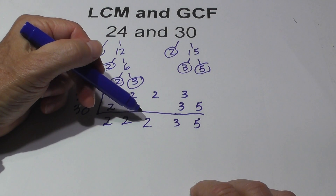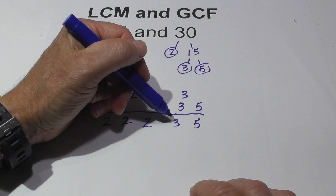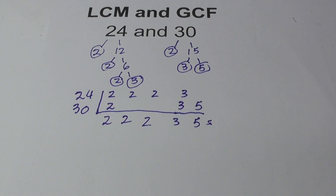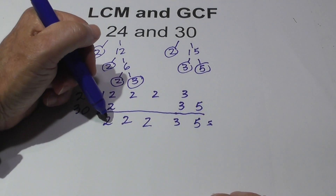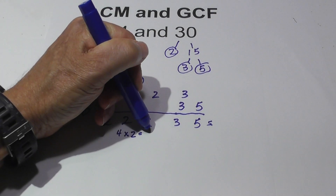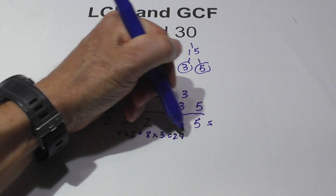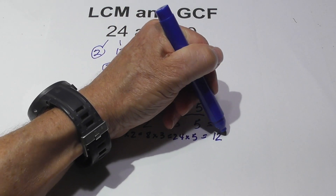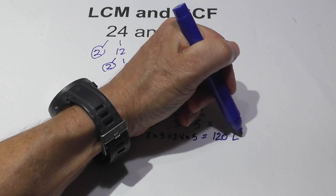So that's 4, 8, 24, and then 24 times 5 equals 120. Let me show you how I got that: 2 times 2 is 4, 4 times 2 is 8, 8 times 3 equals 24, and 24 times 5 equals 120. So the LCM is 120.